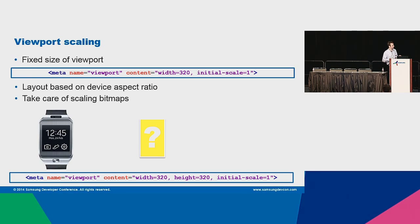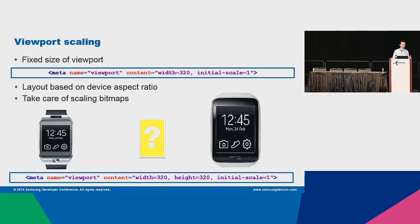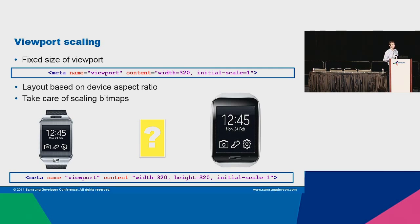What happens if you fix the viewport to the same dimensions as a square — like the Gear S — and you would like to run it on the Gear 2? It will be distorted. The layout will think it is square, but it isn't, and it will be distorted. So I recommend setting only one of the dimensions — width or height — because setting both is a little bit dangerous.